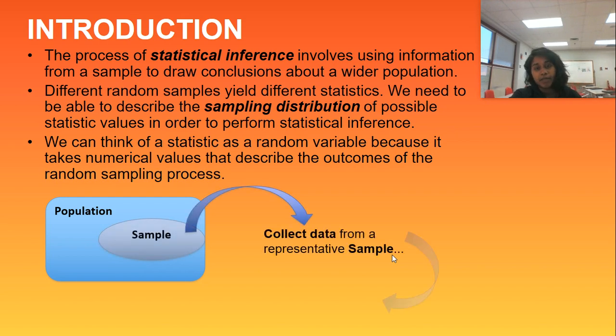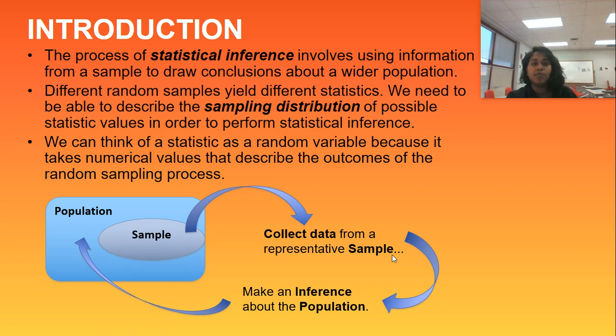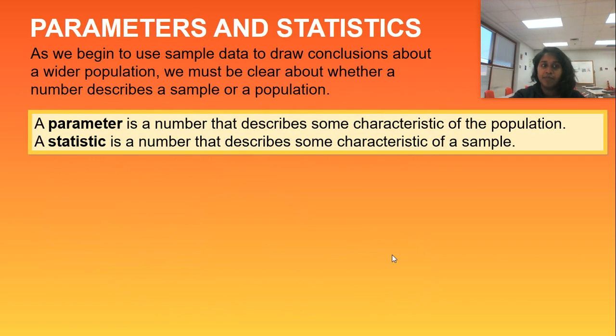We take a population, from its population we take a sample, we collect that data, and then we can make an inference back about the population. That's the true process that we're going to go through. But how can we know that we're using true random sampling? And how do we know about sample distribution? So let's get into that detail.